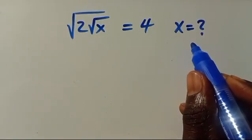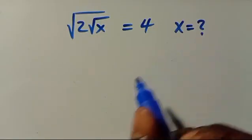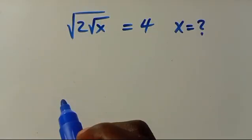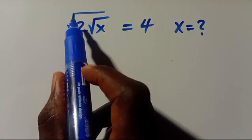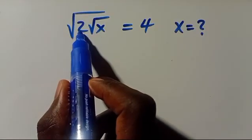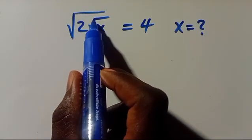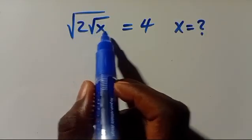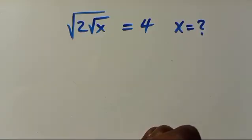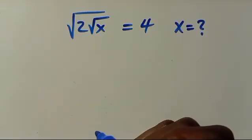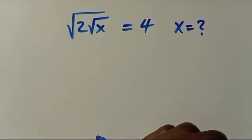What is the value of x? Given that we have root of 2 multiplied by root x equals 4, let's find the solution.